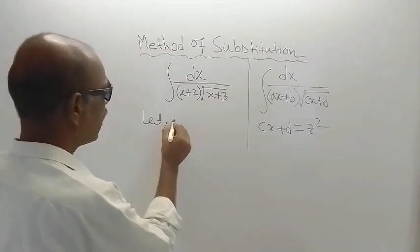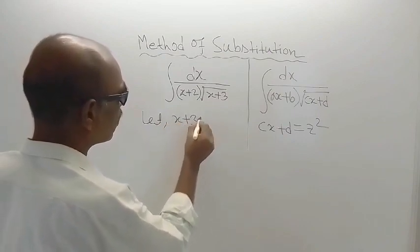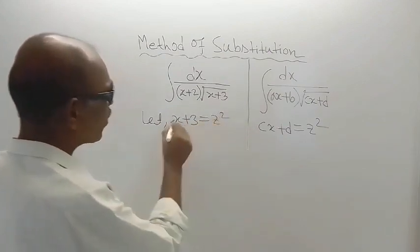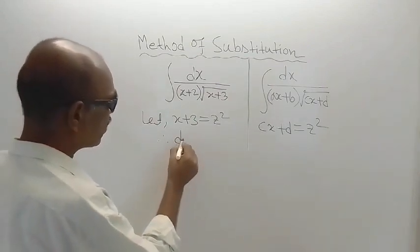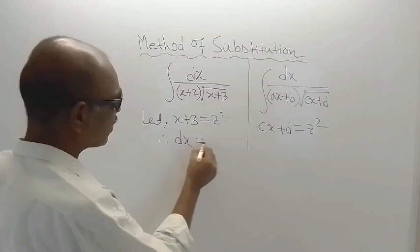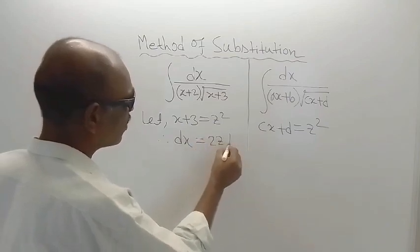So I am writing the same: x plus 3 is equal to z square. Now differentiate both sides of this. So on differentiation you will get what? In the left hand side you will get dx and in the right hand side you will get 2z dz.